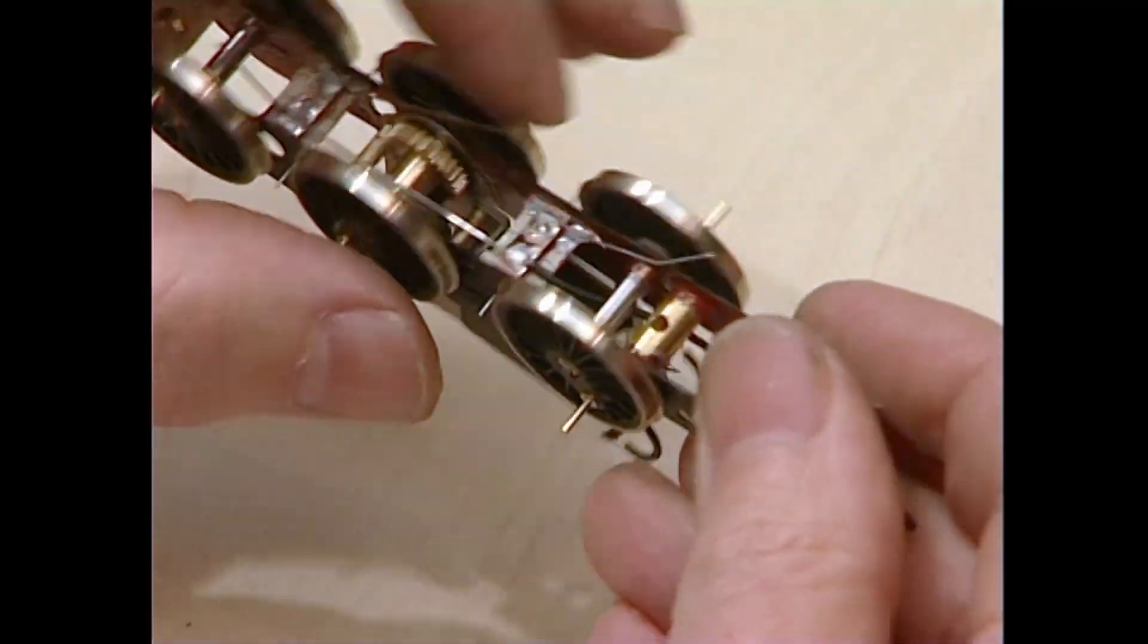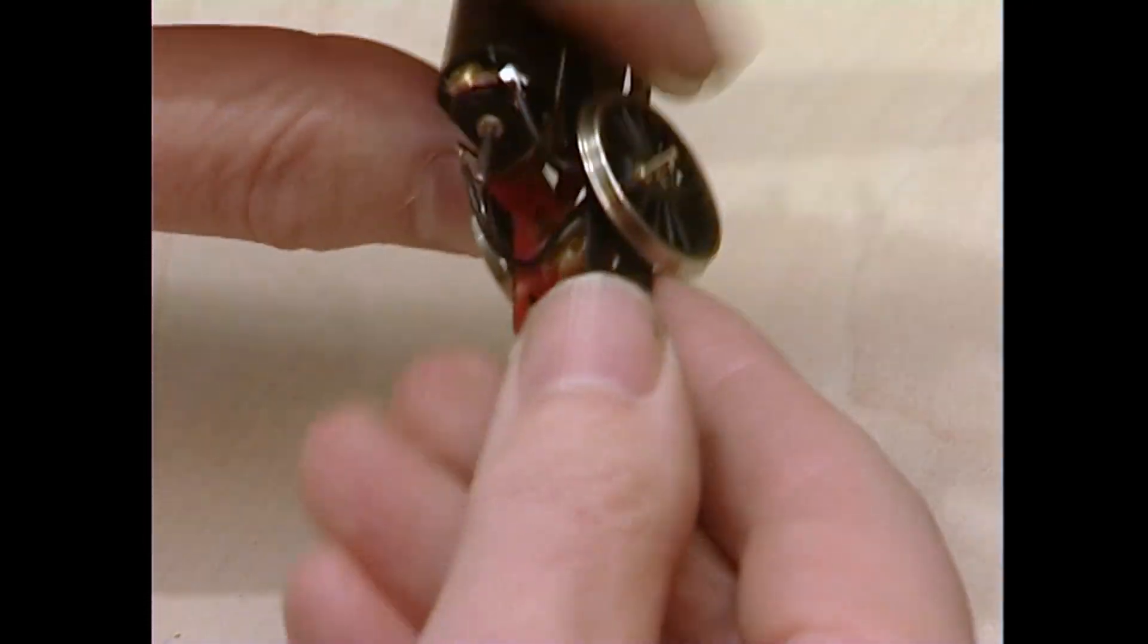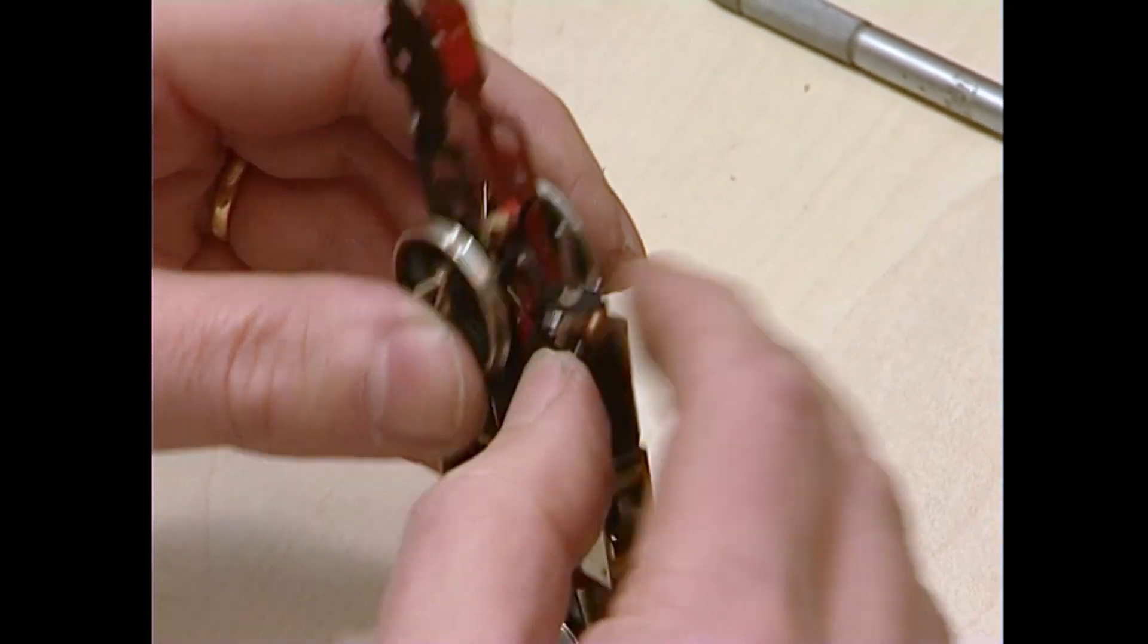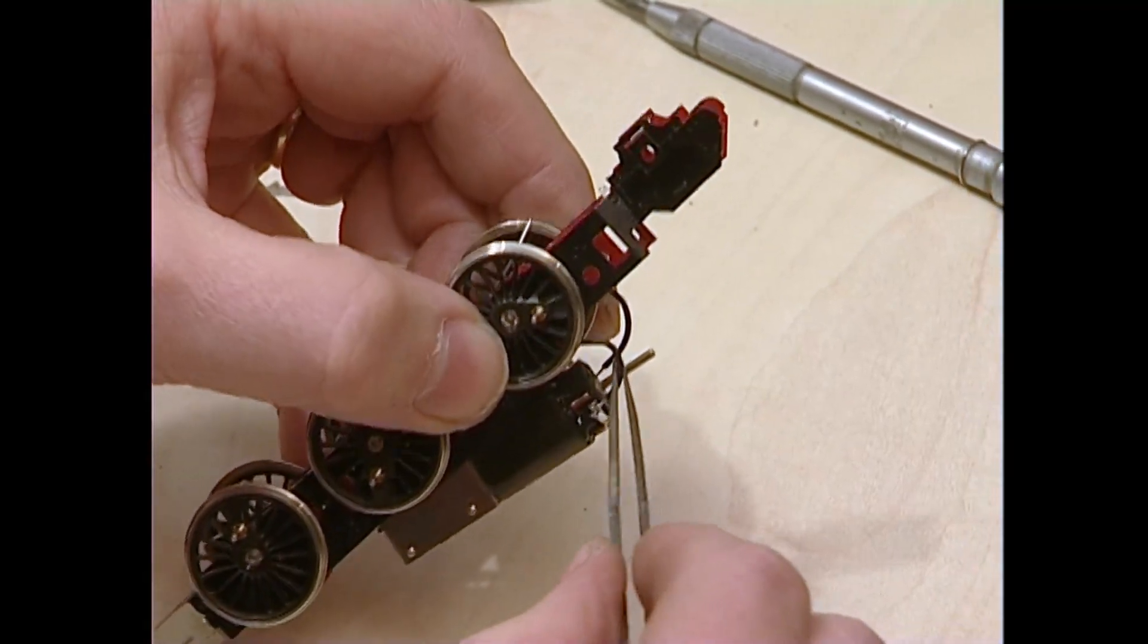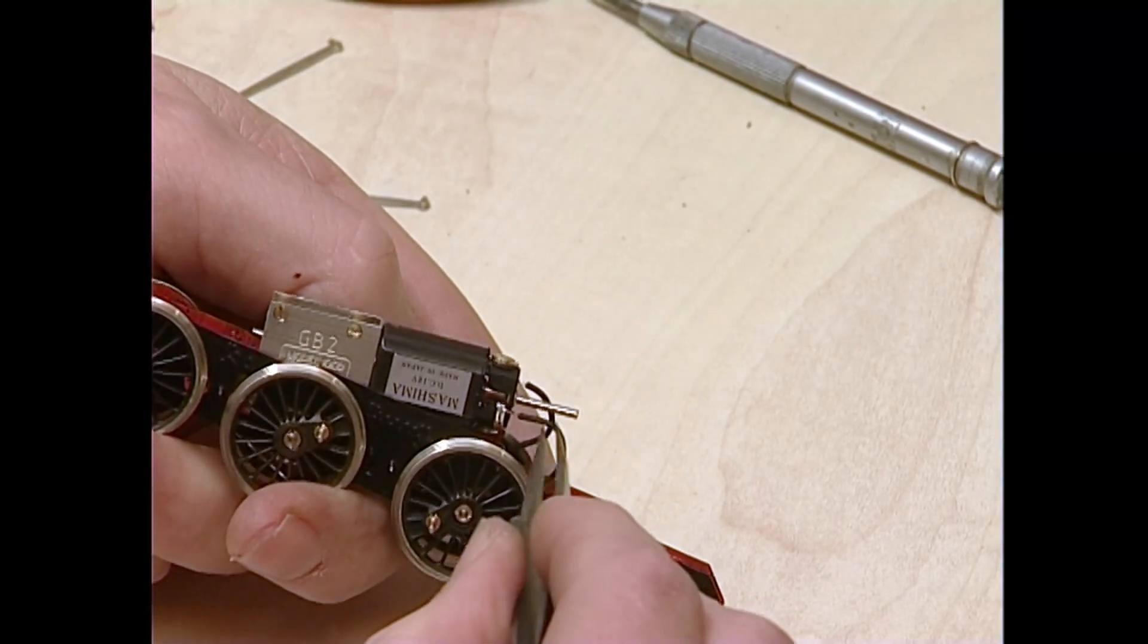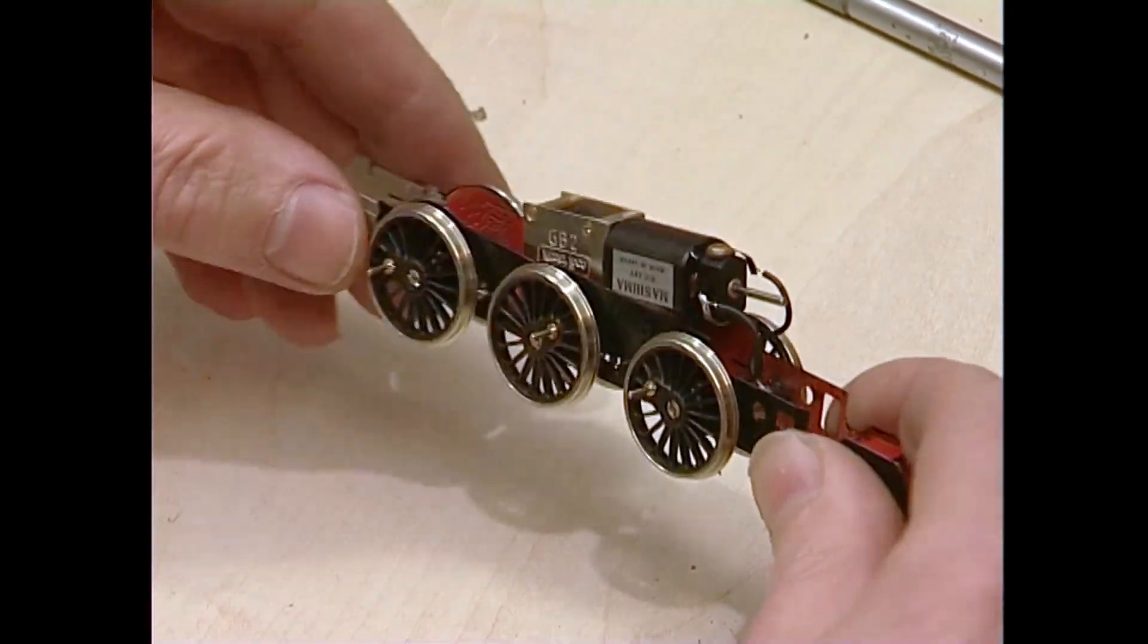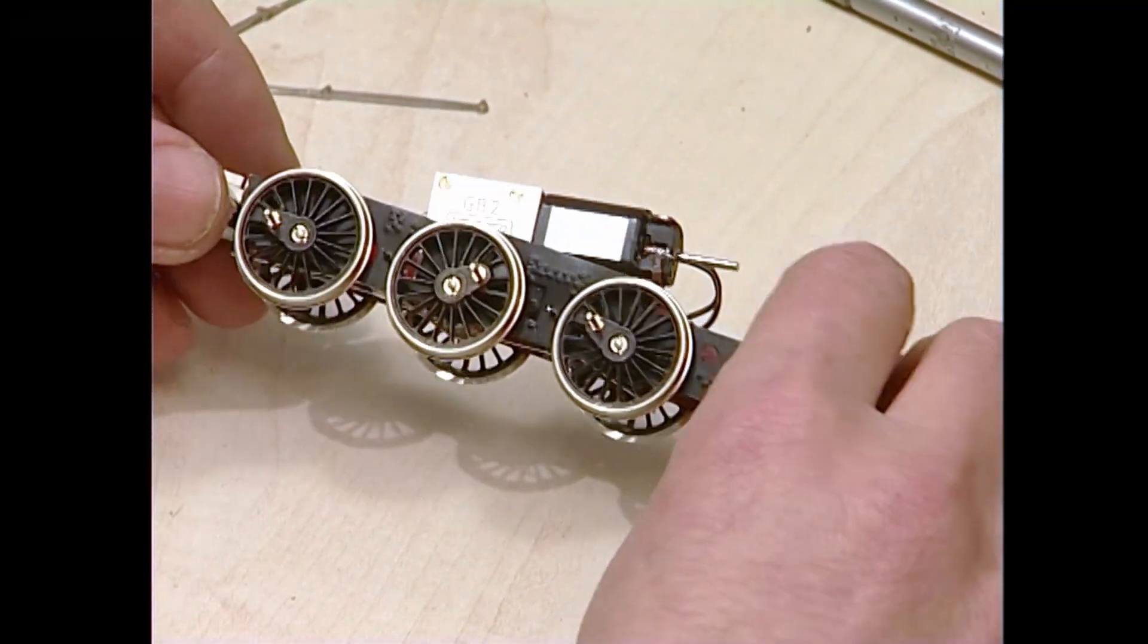And what I've done here is to tin part of the spacer, which will give me the return path for the electrical current. Again, ordinary wire. Place it on the chassis. Again flux. Dwell a little bit longer because you've got a rather larger area to heat up. Just check. If you're not sure, the joint should be nice and bright, just like that.